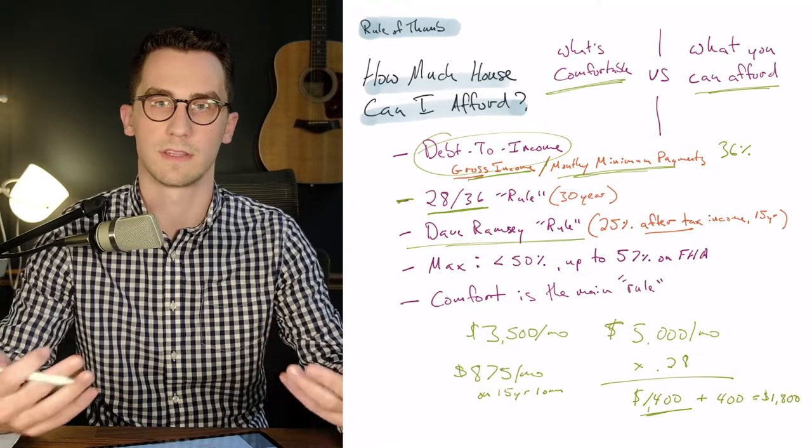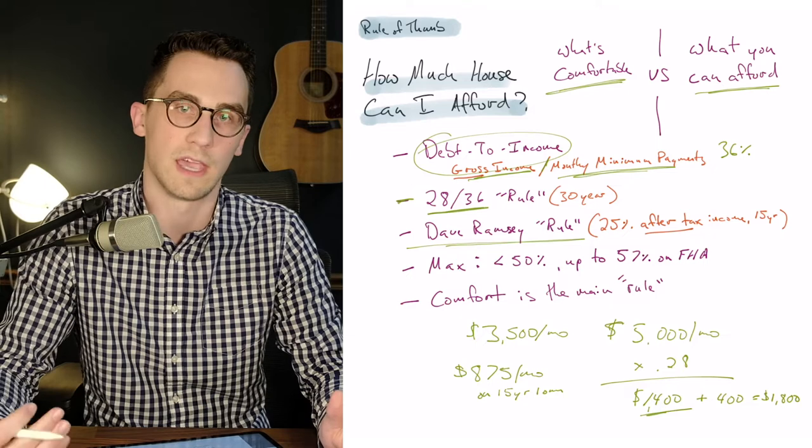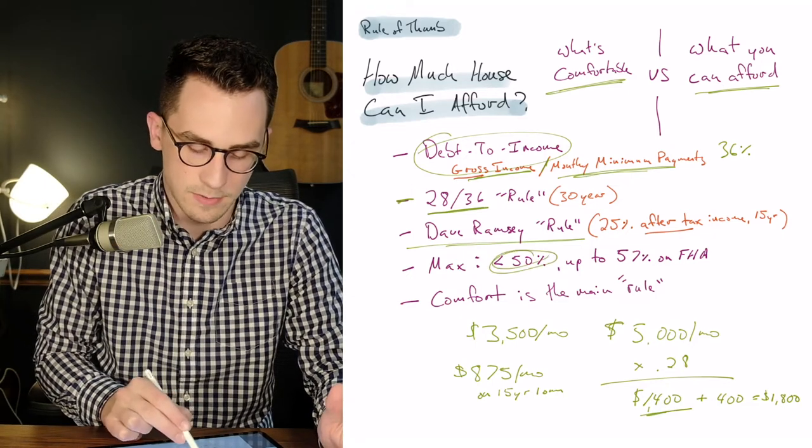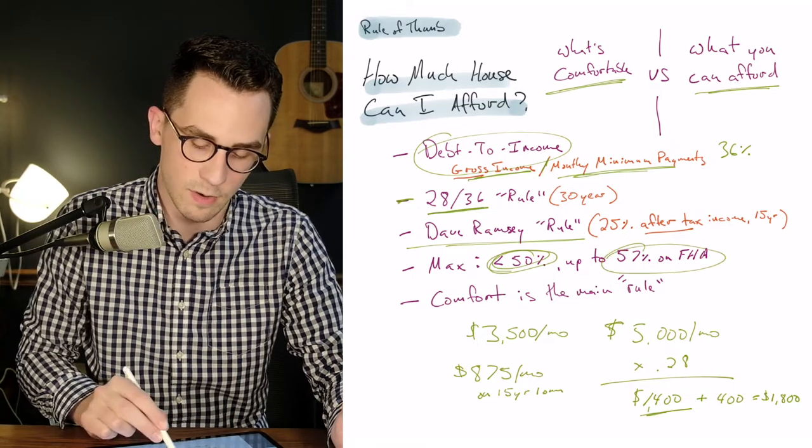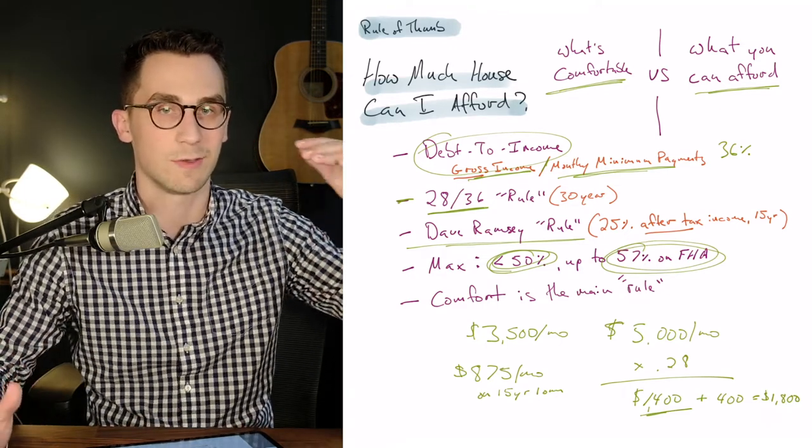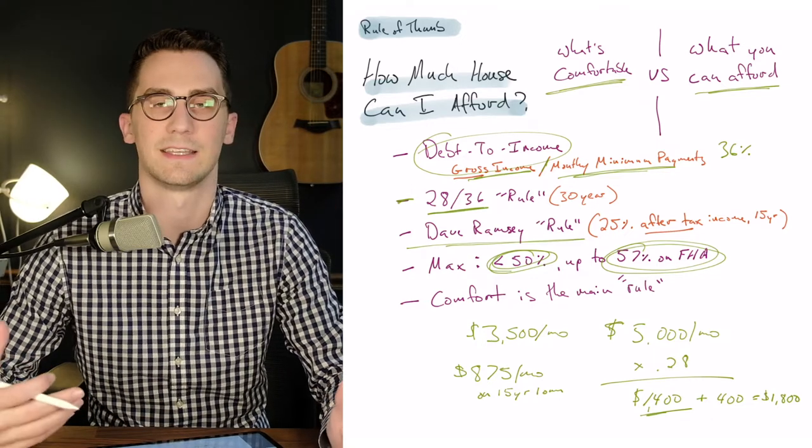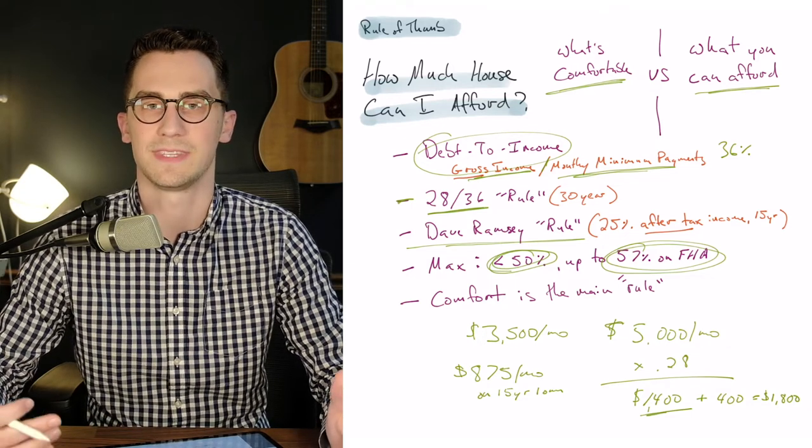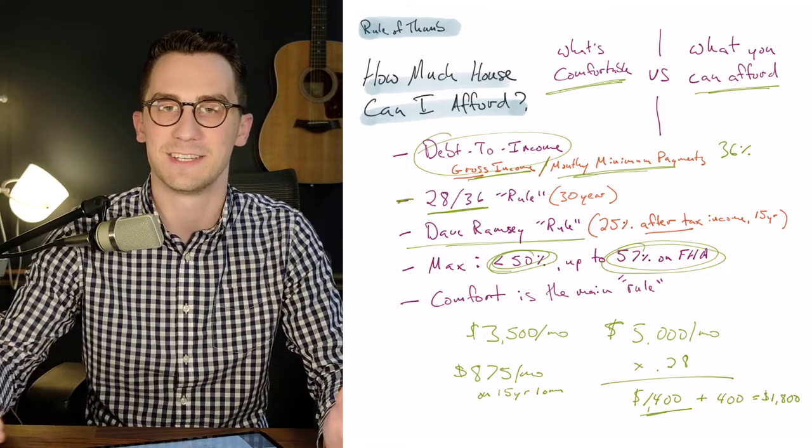So those are two rules that you can keep in mind, depending on the kind of strategy that you want to go with. If you're looking at what you can afford as a max, normally conventional loans are going to go a max up to just under 50% debt to income. FHA will actually go up to 57% debt to income. So you can see lenders will give you actually quite a lot of money relative to the income and debt that you have, but that doesn't tell the full scope of the picture. Just because you can get a certain amount of money doesn't mean it's a good decision. Just because a lender and an underwriter is going to give it to you doesn't mean it's a good decision moving forward.